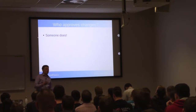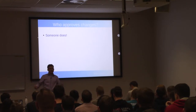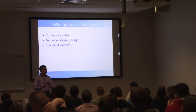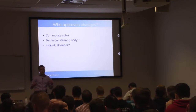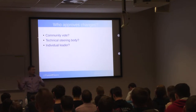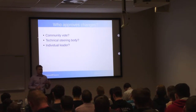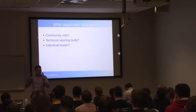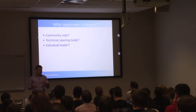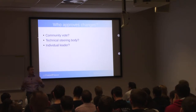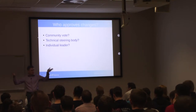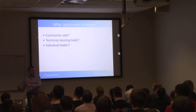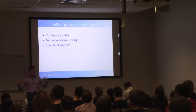So who approves the changes — who has the vote? Somebody does. Do you put it to a community vote, where everyone who is a contributor gives a plus-one or minus-one and you tally it up? Do you have a technical steering body — a smaller group of people that evaluates technical changes and makes the decision? Or do you have an individual leader? In the kernel, for example, Linus is the ultimate authority, and he's delegated to people in different subsystems — within each smaller part, a person owns it and makes the decision.